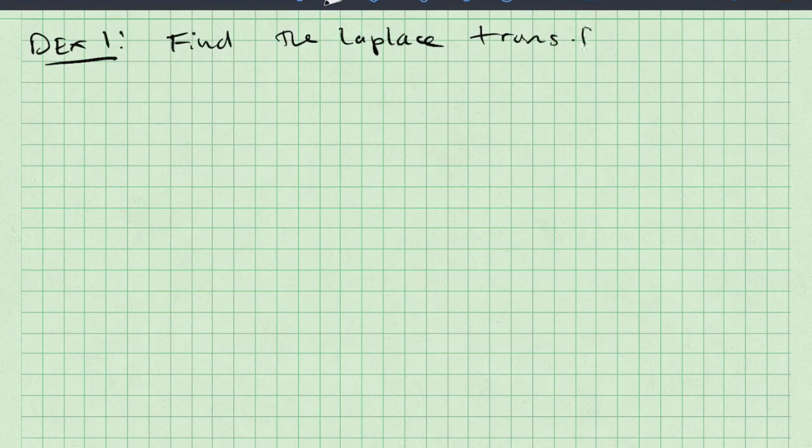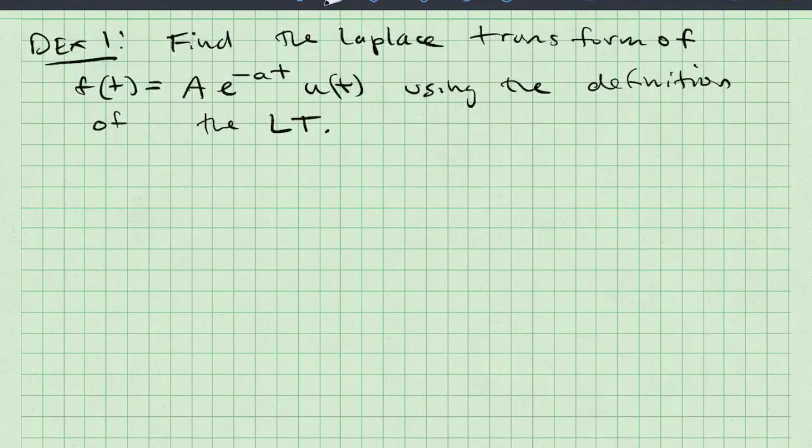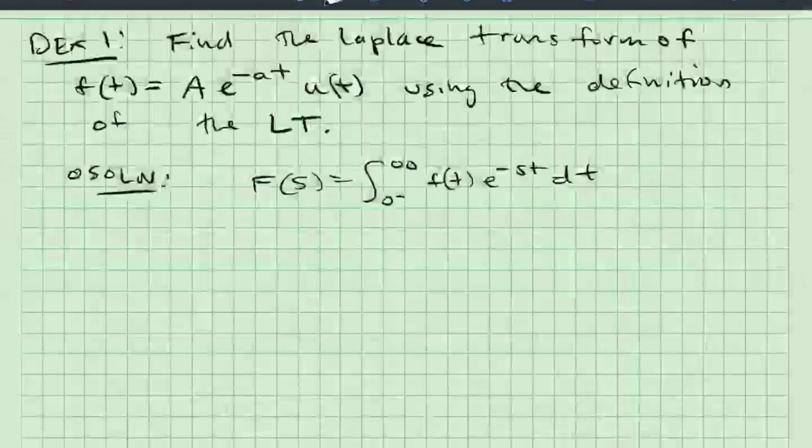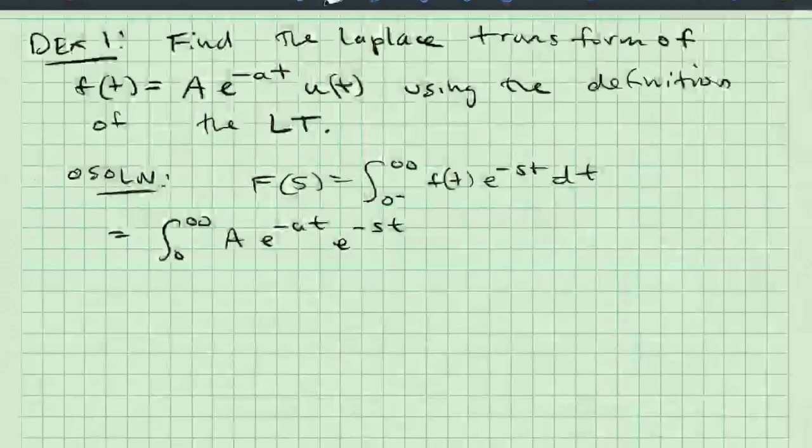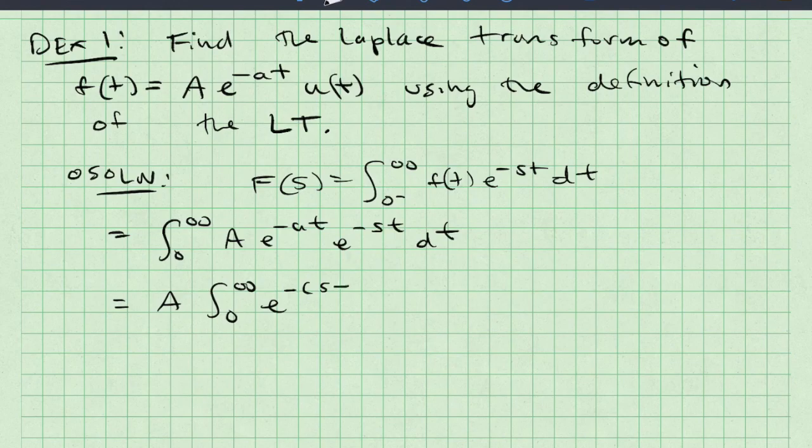Okay, I would like to apply some of what we've learned to some examples. In the first example, I'd like to find the Laplace transform of a time domain function f(t) which is equal to A e^(-at) u(t), and I want to do so using the definition of the Laplace transform. To start with, I'm going to write that definition down. Then I'm going to plug in the value of f(t). So I get the integral from zero to infinity of A e^(-at) e^(-st) dt. A is a constant so I can pull it out front and I can take those two exponentials and mush them together.